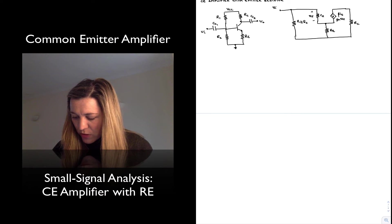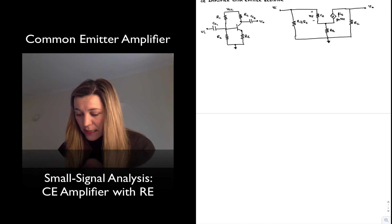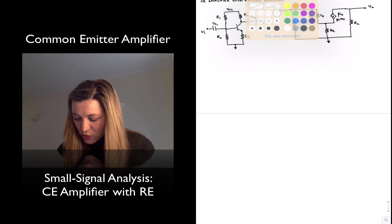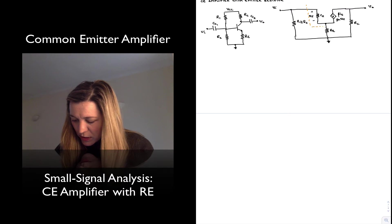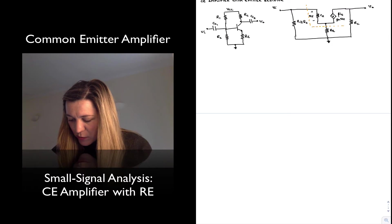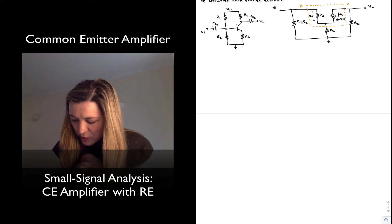To ground, this is my output terminal V_out. And this is my AC equivalent circuit. My transistor will now be this part, has been replaced by its hybrid pi model.